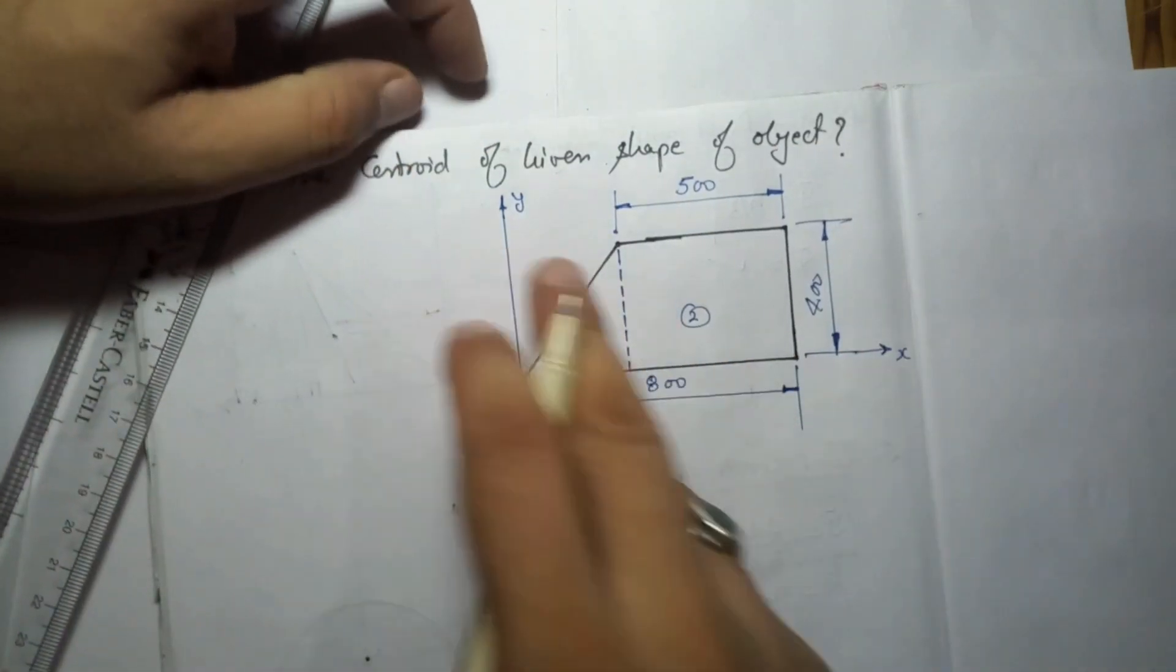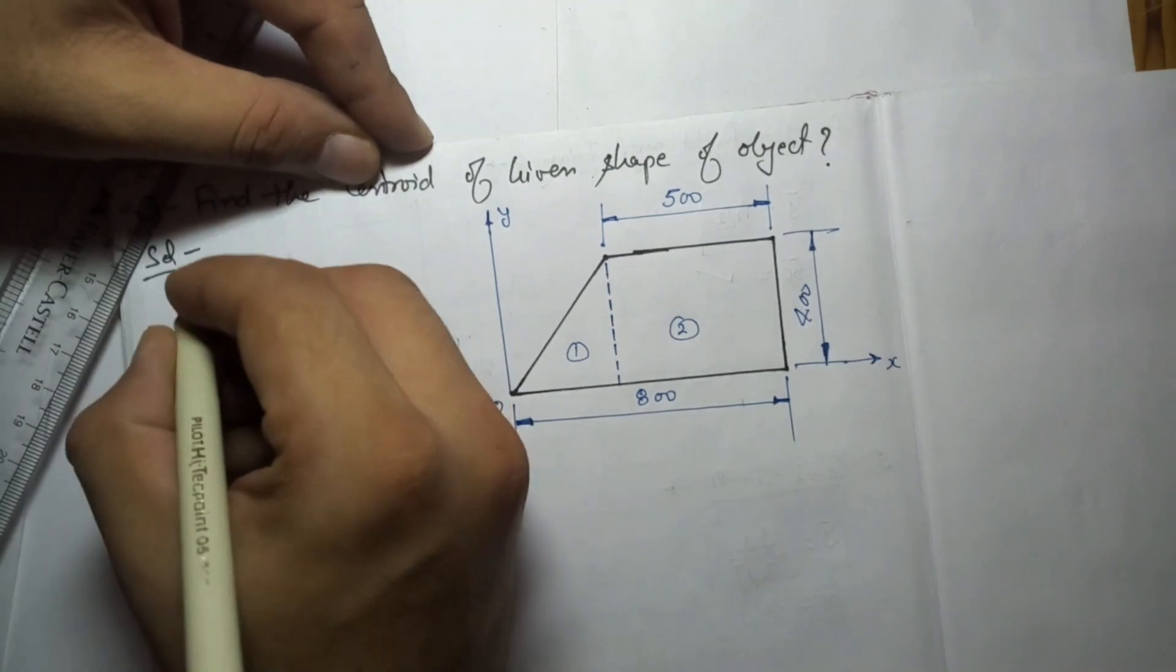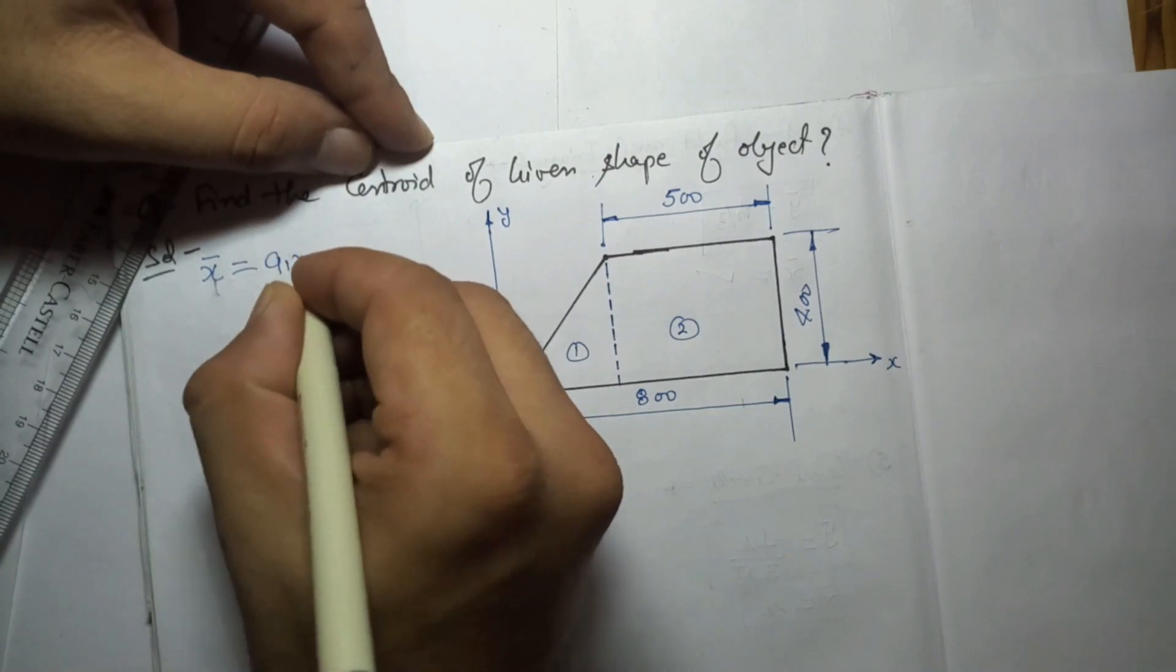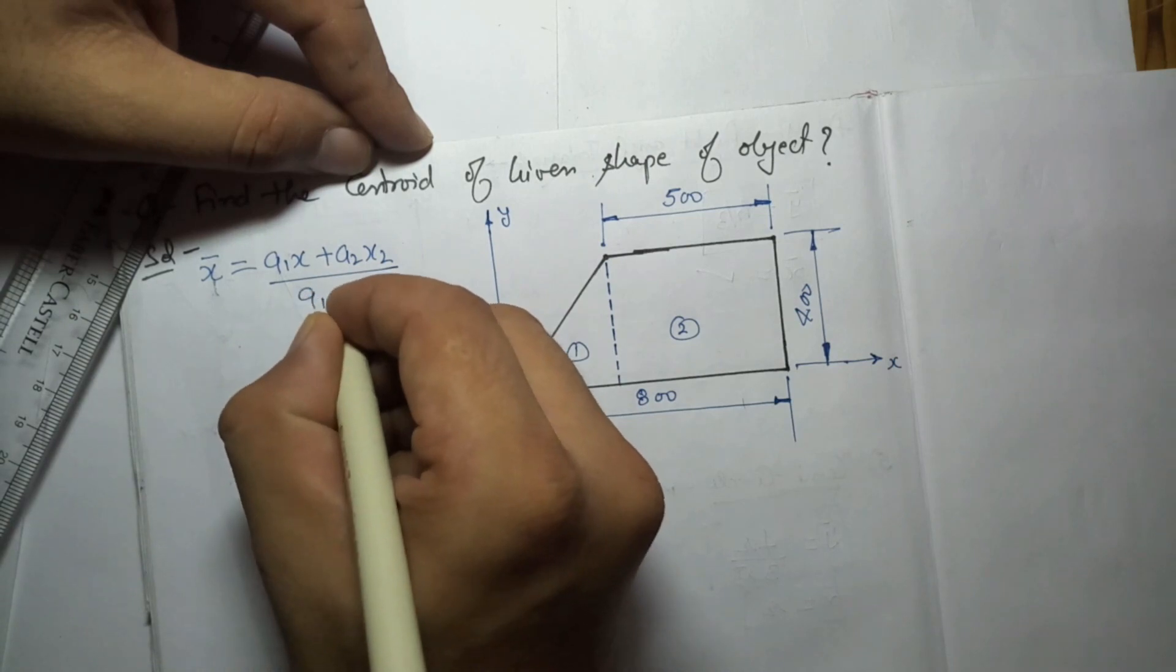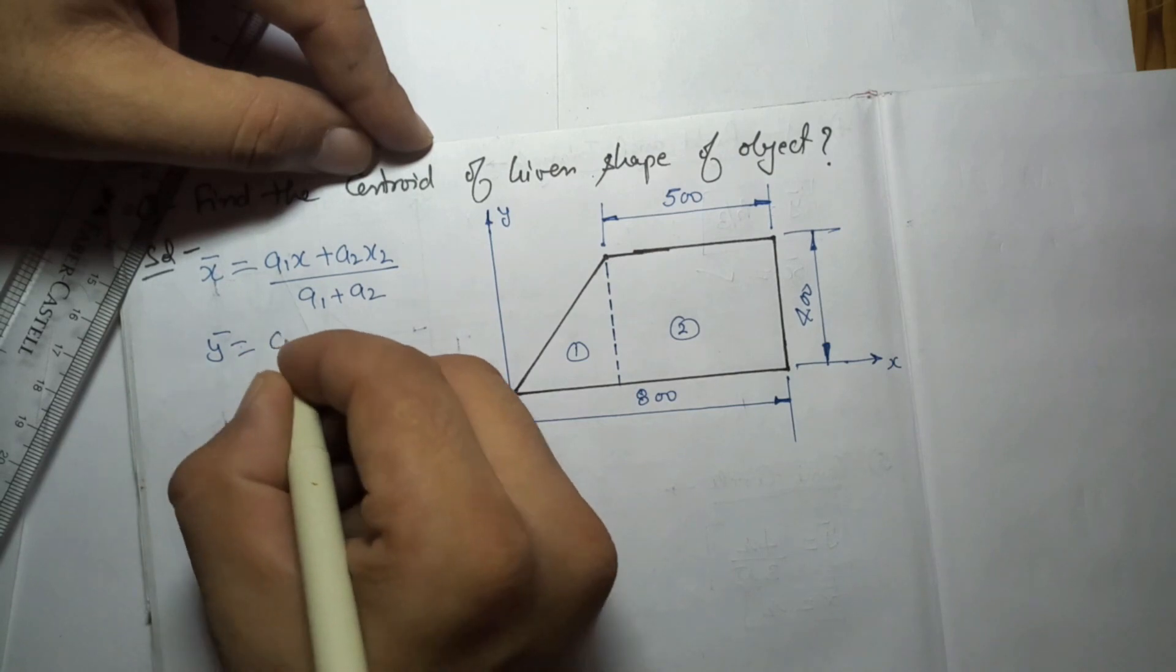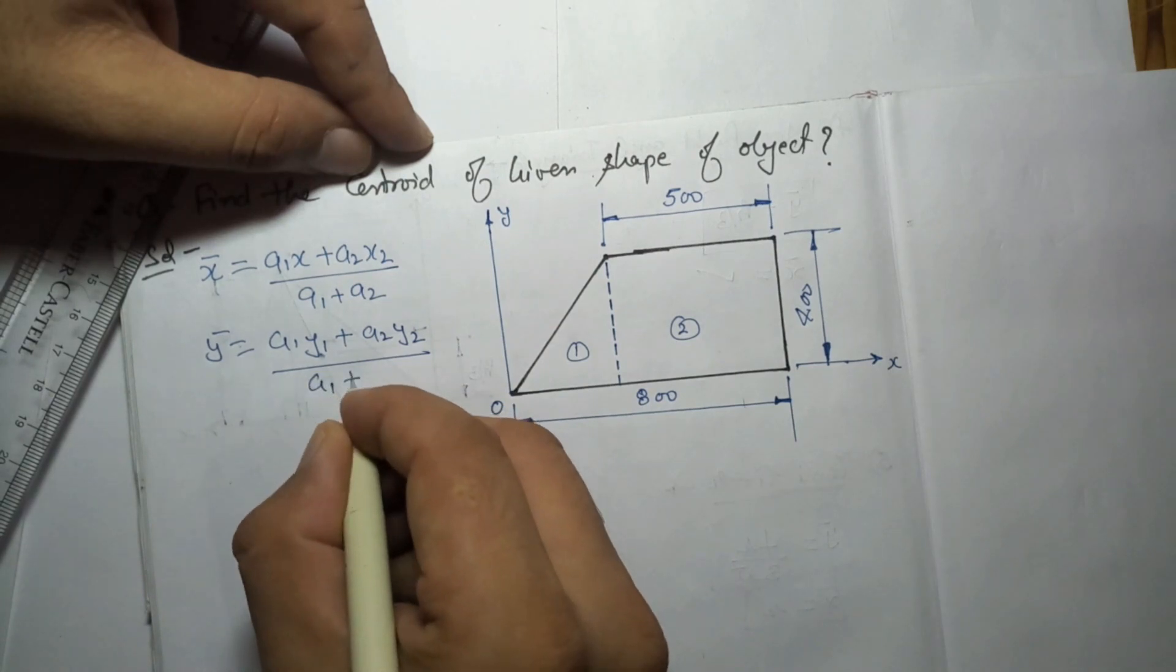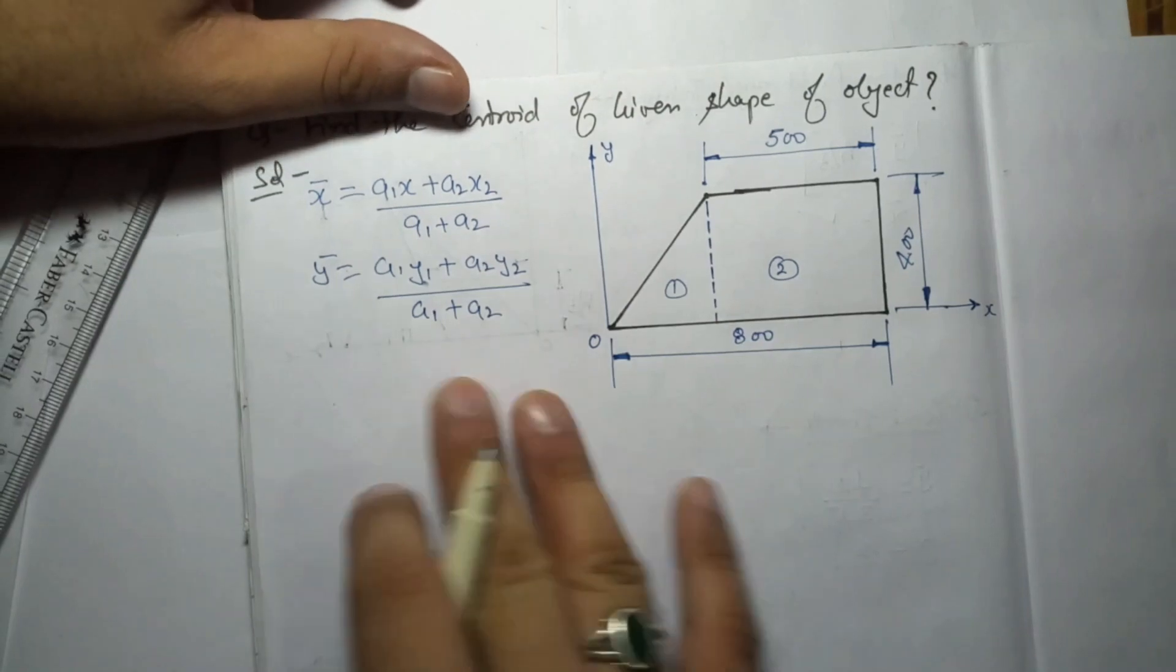Now there are two surfaces only, so what will be the final formula? We know that to find out the centroid, x̄ will be A1·x1 + A2·x2 divided by A1 + A2. We have to fill the values here after calculating. So ȳ will be A1·y1 + A2·y2 divided by A1 + A2. Only two surfaces, so I am going up to two only. This is the final formula where we have to fill the values.